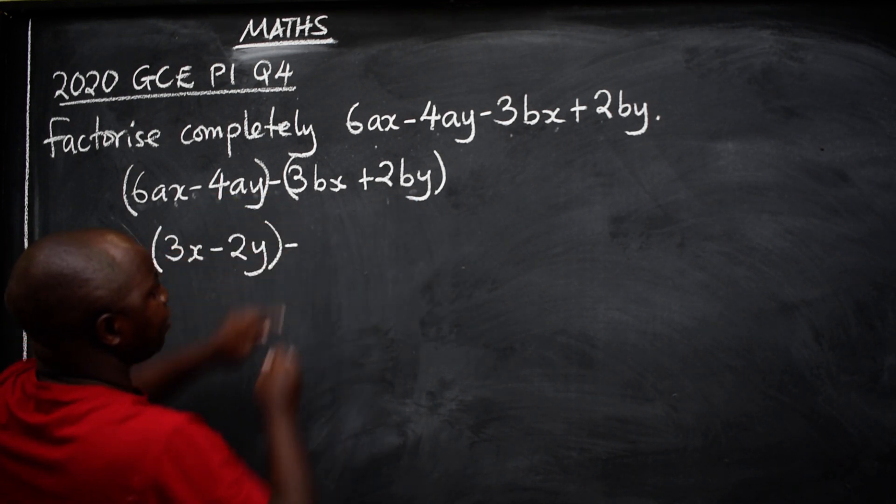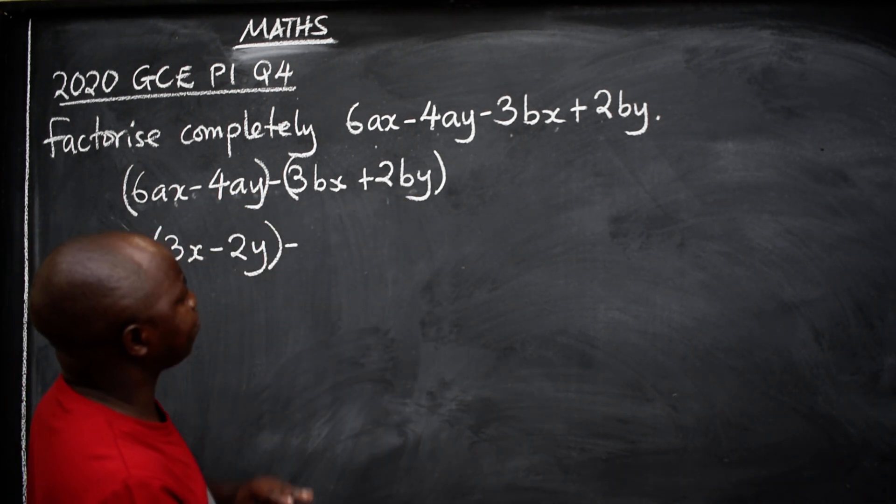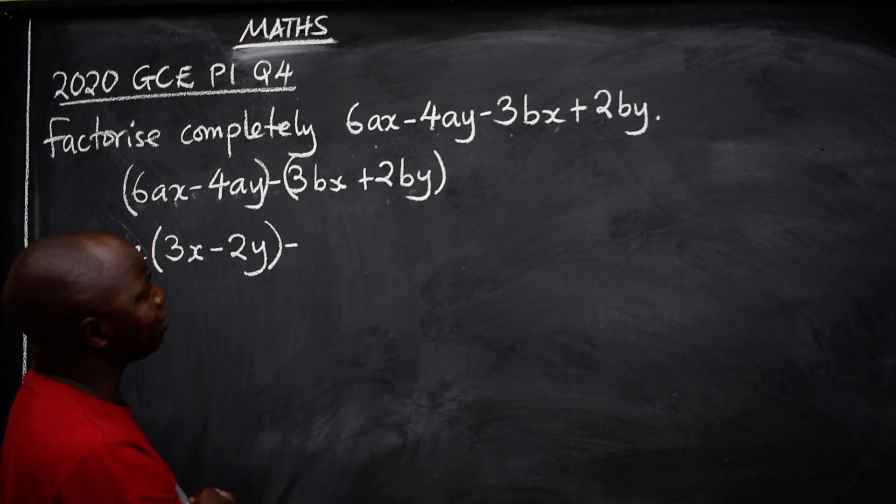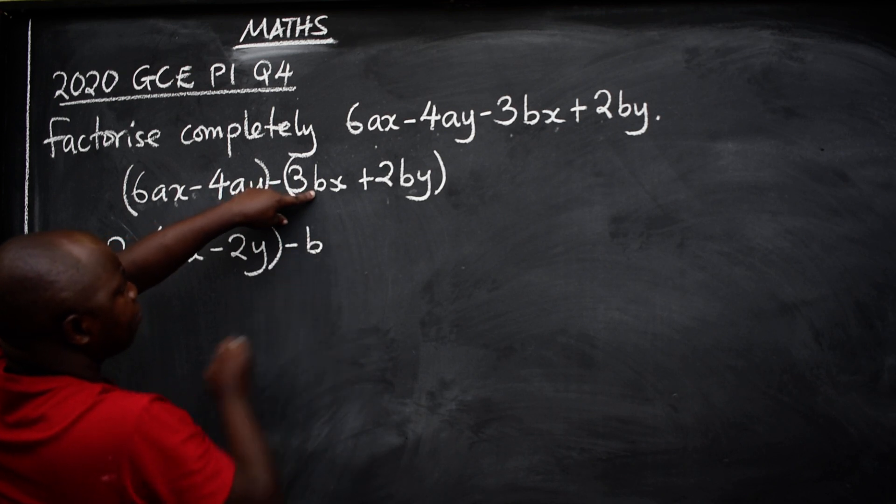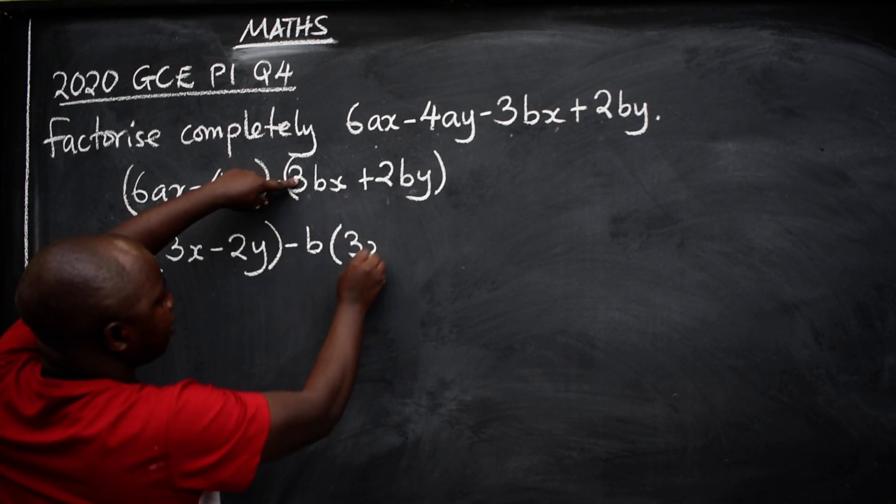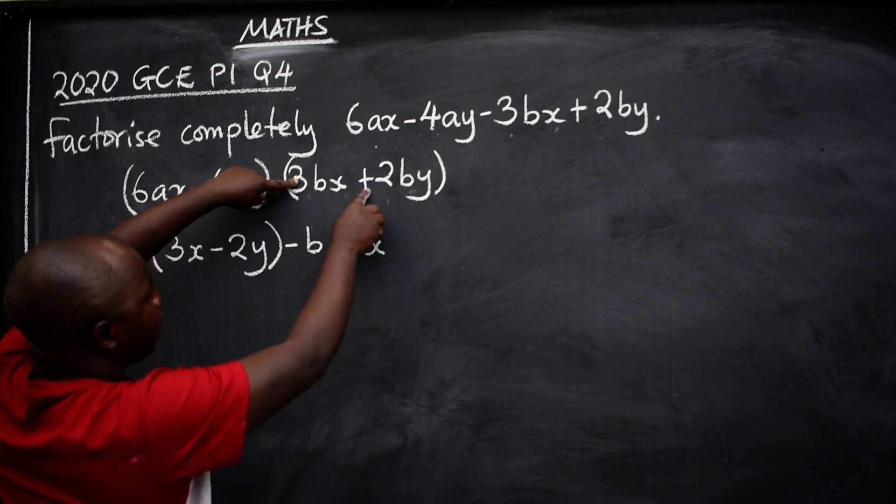Minus. Come to this side. What is common? Numbers? Nothing is common. Variables or letters? I have got B. So B outside. What will remain here? 3X.